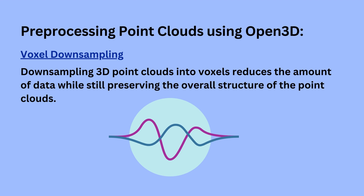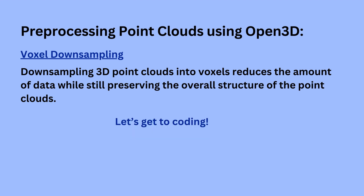Downsampling 3D point clouds into voxels reduces the amount of data while still preserving the overall structure of that point cloud. A voxel refers to a small cubic volume in 3D space that groups together nearby points in a point cloud. The size of the voxels used for downsampling can be adjusted based on the desired level of detail and specific requirements of your use case.